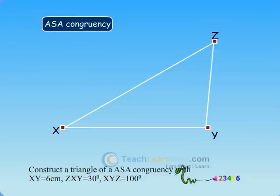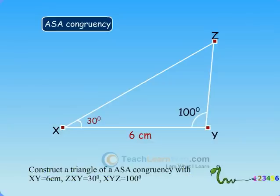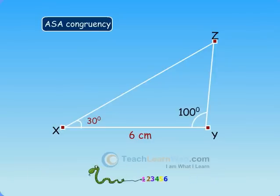Construct triangle XYZ if it is given that XY is equal to 6 cm, angle ZXY is equal to 30 degrees and angle XYZ is equal to 100 degrees. Before actual construction, we draw a rough sketch with measures marked on it.